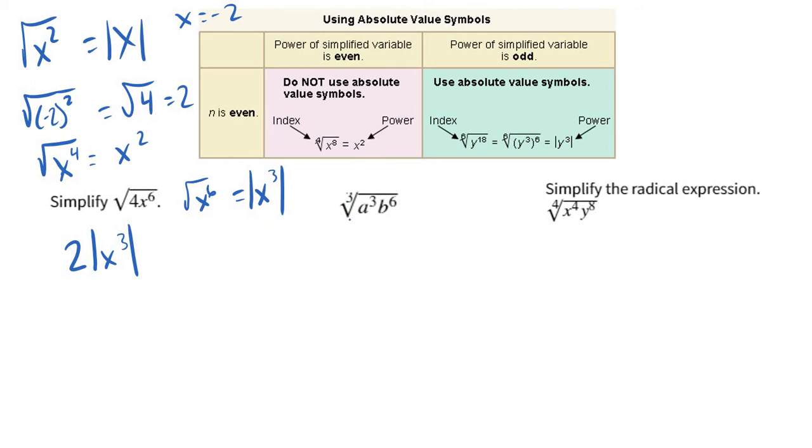How about this one? That's a cube root. I'm not sure how well you can see that. Cube root. Now, n is even. So this is only for even roots. If they're odd roots, you don't even worry about it. You don't need absolute values. So here I know no absolute value is required. Cube root of a cubed. Well, that's just a, right? 3 divided by 3. b to the sixth. So 6 divided by 3 is 2. So this is a, b squared. Good to go. No absolute value is required.